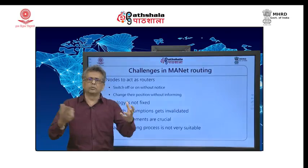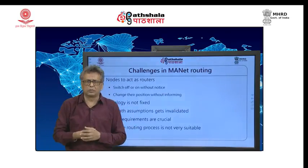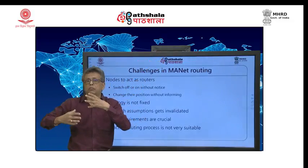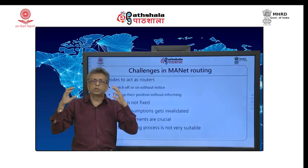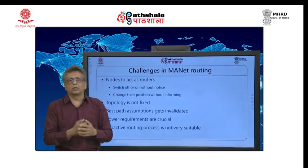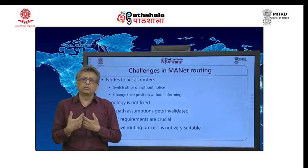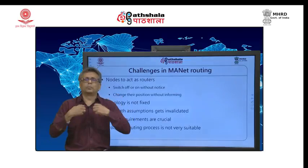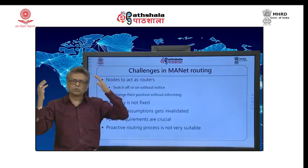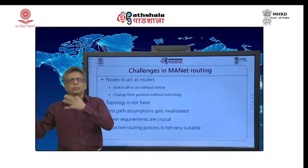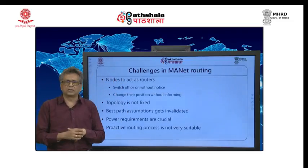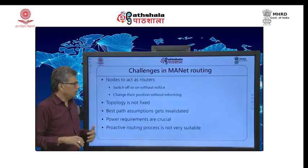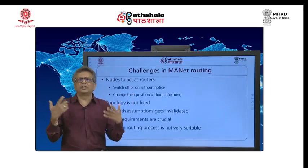Topology is not fixed. You cannot assume that a destination can be reached through a particular route. In earlier cases we elaborated on that and found the shortest route using algorithms, but in MANets those things go out the window. You do not have a fixed topology; you cannot have any presumptions about routes. You cannot have routing processes happening in advance with routing tables pre-built. The consequence is that best path assumptions do not remain valid.